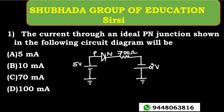Hello everyone, welcome to our channel Shubhada Group of Education. You are watching Satish Physics videos for Karnataka CET and NEET. Here is the next problem on semiconductor electronics. The problem says that the current through an ideal PN junction shown in the following circuit diagram will be.